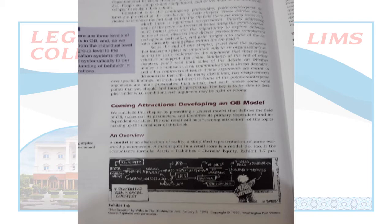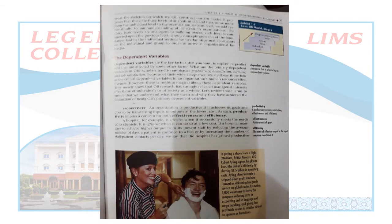In the scientific field, we have independent and dependent variables. A dependent variable is a response that is affected by an independent variable. The independent variable is the cause — it is not dependent on any other external factor. Whatever response is affected because of the independent variable — that is your dependent variable.